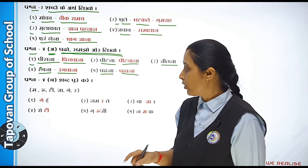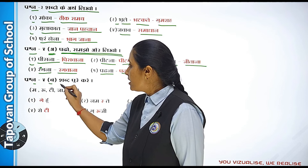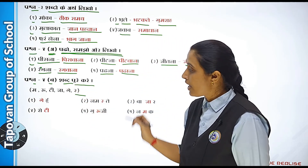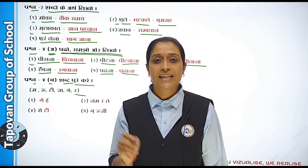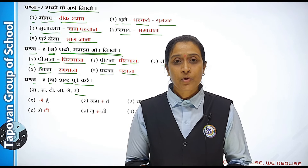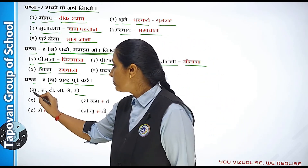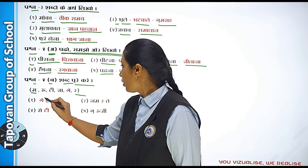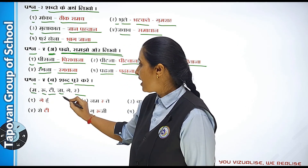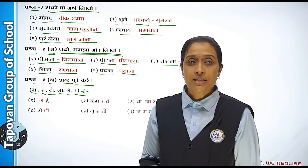Uske baad hai: shabd poore karo. Yahaan jo aadhe shabd hain, jiske aage blank diya gaya hai, woh blanks aapko poorne hain. Yahaan options bhi diye hain jaise: 'ba,' 'roo,' 'tee,' 'ja,' 'ge' — aise aadhe-adhe shabd likhe hain. Toh aapko blanks fill karke shabd poora karna hai.